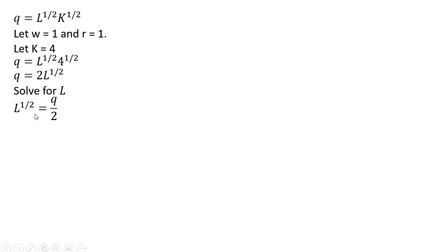Just dividing through by 2 and now squaring both sides. The next step is to go to the cost function. So cost equals variable cost, wage times labor, plus fixed cost, price of capital times units of capital.